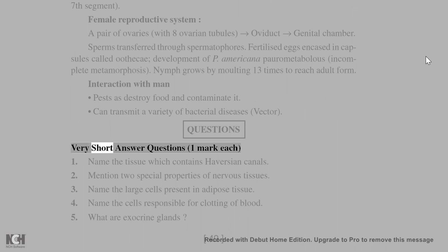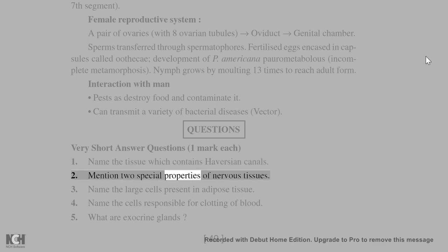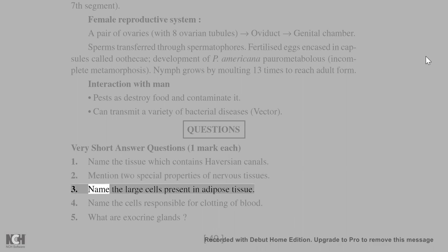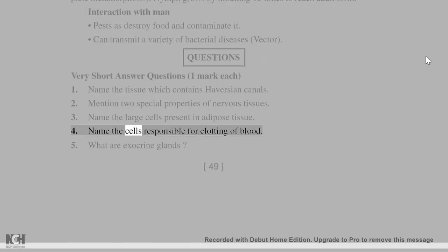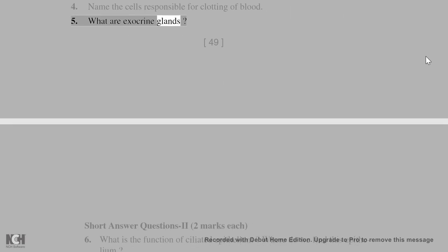Questions — Very short answer questions, 1 mark each: 1. Name the tissue which contains Haversian canals. 2. Mention two special properties of nervous tissue. 3. Name the large cells present in adipose tissue. 4. Name the cells responsible for clotting of blood. 5. What are exocrine glands?